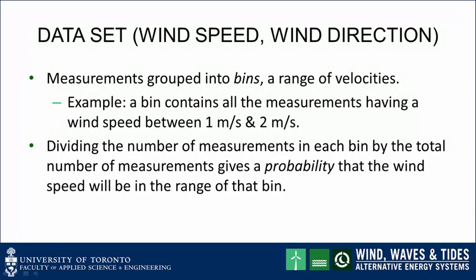The measurements provide a data set consisting of wind speed and wind direction data. In this lecture, we will focus on the wind speed measurements and save the wind direction measurements for the next lecture. Wind speed measurements are grouped into bins, where a bin is a range of velocities. For example, a bin contains all the measurements having a wind speed between 1 meter per second and 2 meters per second. Dividing the number of measurements in each bin by the total number of measurements gives a probability that the wind speed will be in the range of that bin.